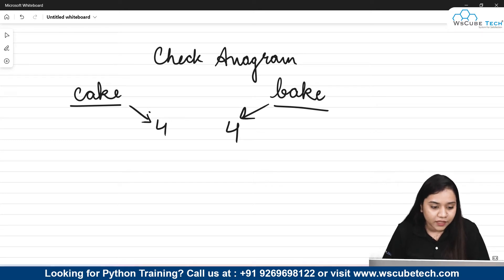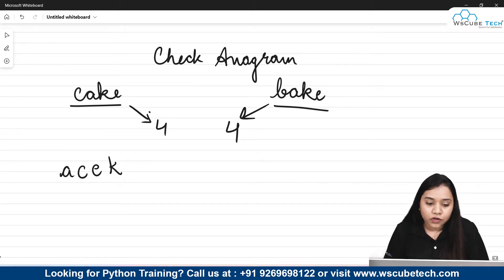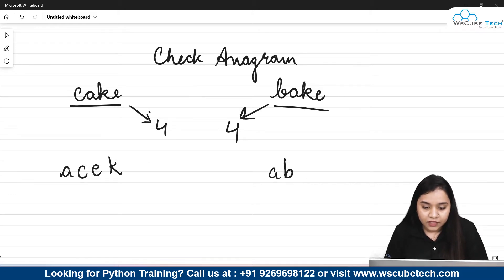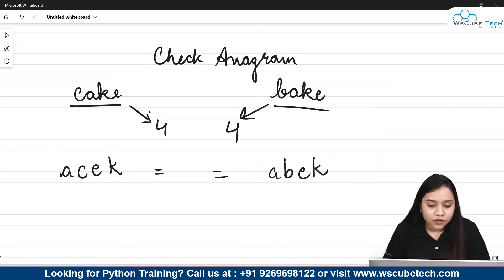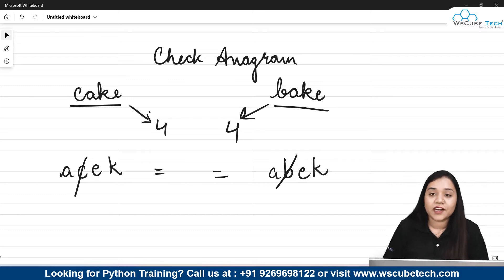The sorted value of 'cake' in ascending order would be A, C, E, K. And the sorted value of 'bake' is A, B, E, K. Now if you match both of them, the second letters — C and B — are not similar. That means this is not an anagram.